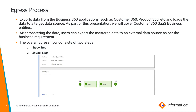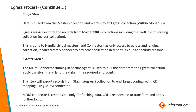The first step is the Stage step, and the second is the Extract step. The Stage step happens within MongoDB, so it is a quite fast process. What happens exactly in the Stage step is data is pulled from the master collection and written to an egress collection within MongoDB. The egress service exports those records from master or xref collections, including the xref links, to the staging collection.